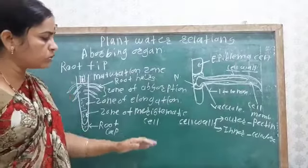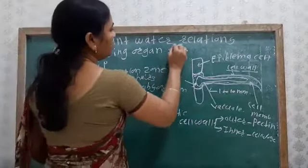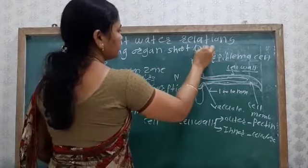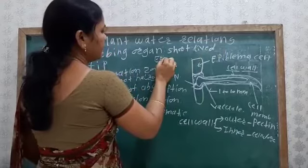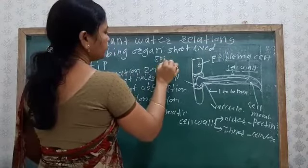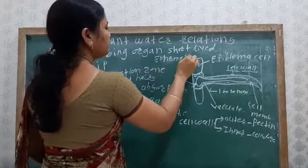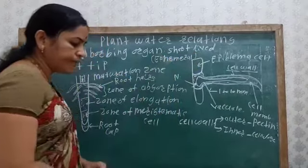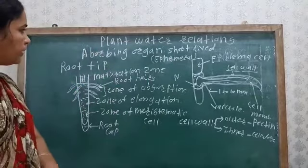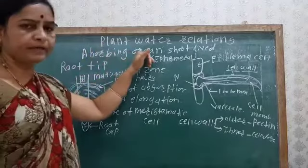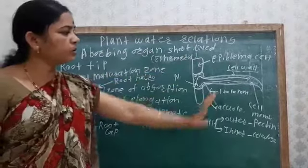The root hair is unicellular, colorless, unbranched, and short. It is derived from the epiblema cell. This covers the structure of the root hair, which is the absorbing organ. We have seen the root tip structure and the root hair structure.